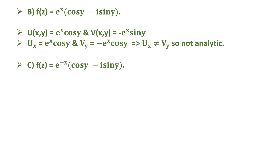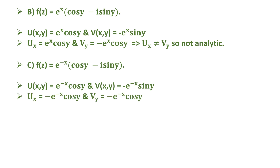For option c, f(z) = e^(-x) times (cos y minus i sin y): the real part u(x,y) = e^(-x) cos y and the imaginary part v(x,y) = minus e^(-x) sin y. This gives ux = minus e^(-x) cos y and vy = minus e^(-x) cos y. Also, uy = minus e^(-x) sin y and vx = e^(-x) sin y.